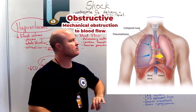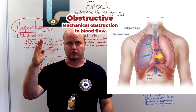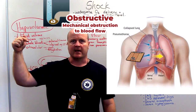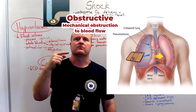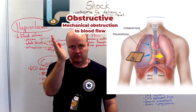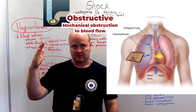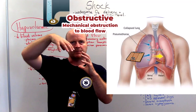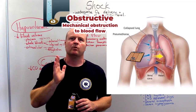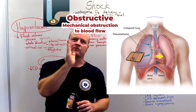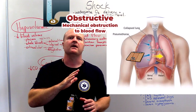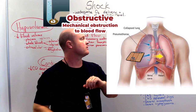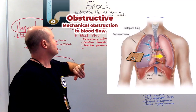Or a tension pneumothorax. This is where we get a little trap door cut in our pleura. As we breathe in, air goes into that pleural space. As we breathe out, that trap door shuts and air gets trapped in the pleural space. As that keeps building up, it can end up squashing our superior and inferior vena cava and putting pressure on the heart and obstructing it — therefore, obstructive shock.